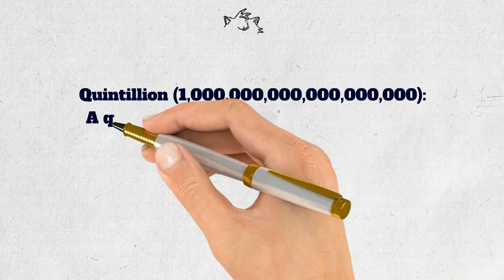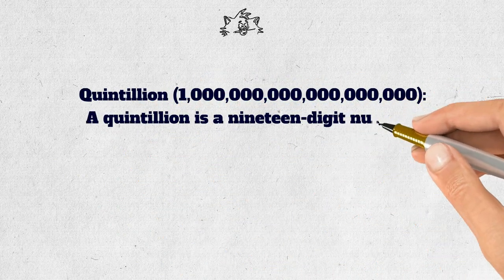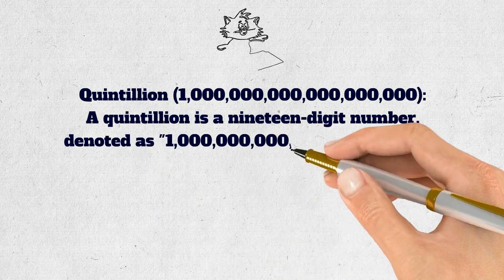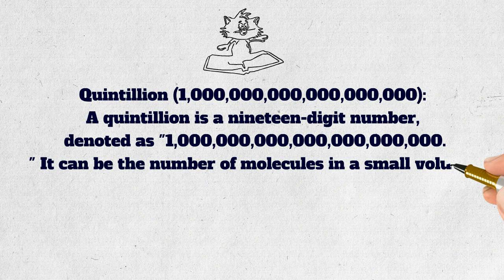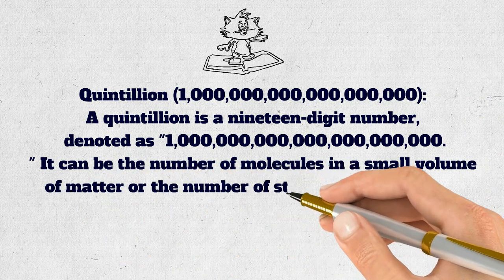Quintillion. A quintillion is a 19-digit number, denoted as 1,000,000,000,000,000,000. It can be the number of molecules in a small volume of matter or the number of stars in a large galaxy.